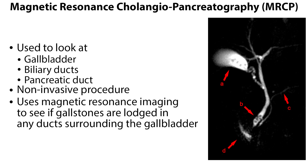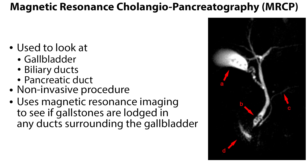Another technique used to look at the gallbladder, biliary ducts, and pancreatic duct is the Magnetic Resonance Cholangiopancreatography, or MRCP. However, it is a non-invasive procedure that uses magnetic resonance imaging to see if gallstones are lodged in any ducts surrounding the gallbladder.